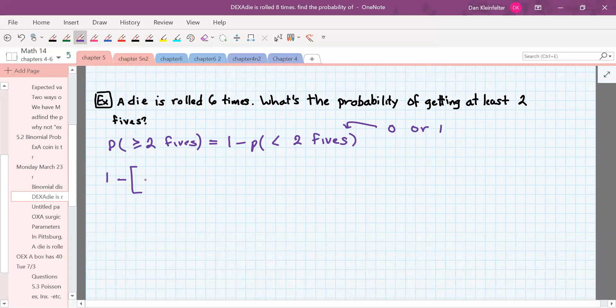So one minus and then less than two fives, that will be either zero or one. So let's do for zero first. Out of the six rolls, we will get zero fives. The probability of getting a five is one sixth. That will occur no times. The probability of failing to get a six, a five, excuse me. The probability of failing to get a five will occur five sixths. The probability that has to occur all six times.